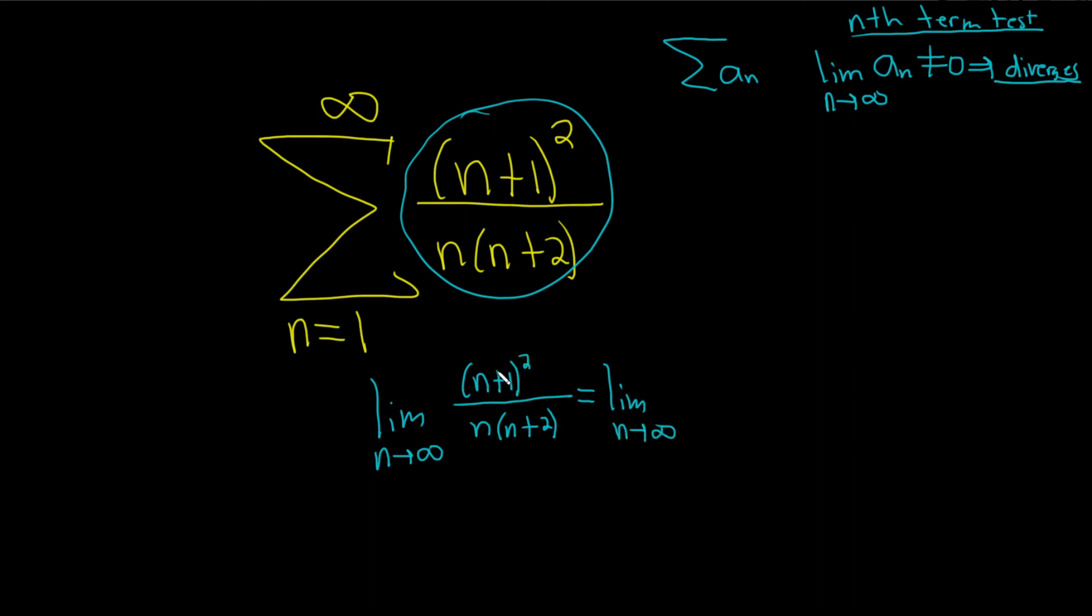If you multiply out the numerator, the formula for (n+1)² says you square the first one, you multiply the n and the 1, and you double it, so 2n. And then you square the last one, so 1 squared is 1. And then on the bottom, we distribute the n, so we get n² + 2n.